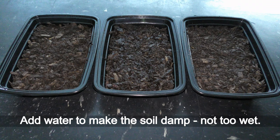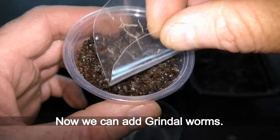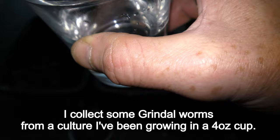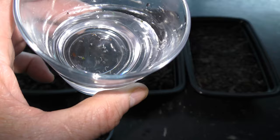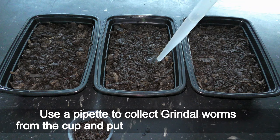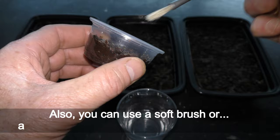Add water to make the soil damp, not too wet. Now we can add grindal worms. I collect some grindal worms from a culture I have been growing in a 4 oz cup. First I put the worms into a cup with water. Grindal worms sink to the bottom. Use a pipette to collect grindal worms from the cup and put them in the new container.